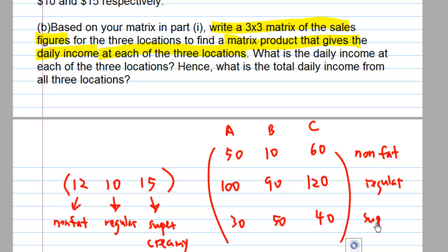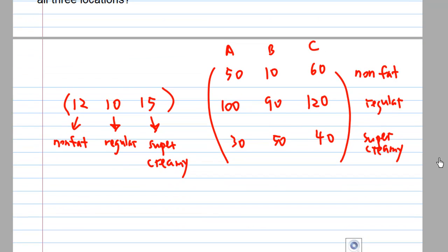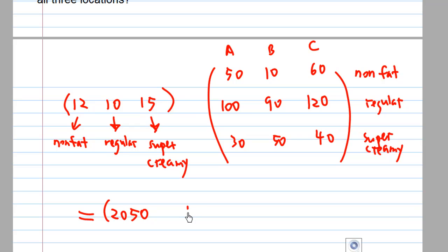Multiplying these matrices, the result equals: 2050 (which is 12×50 + 10×100 + 15×30), then 1770, and 2520. Because we are multiplying a 1 by 3 matrix by a 3 by 3 matrix, we get a 1 by 3 result matrix.